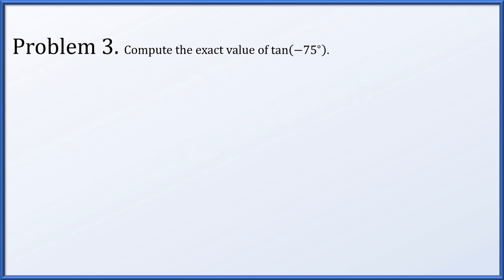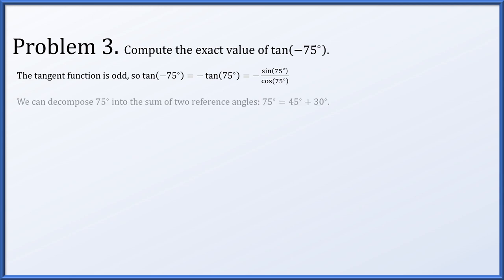Next, let's compute the exact value of the tangent of negative 75 degrees. The tangent function is odd. The first thing I'm going to do is factor this minus sign out, so instead let's compute minus sine of 75 degrees over cosine of 75 degrees, because 75 degrees can be decomposed into the sum of two reference angles, 45 degrees plus 30 degrees.